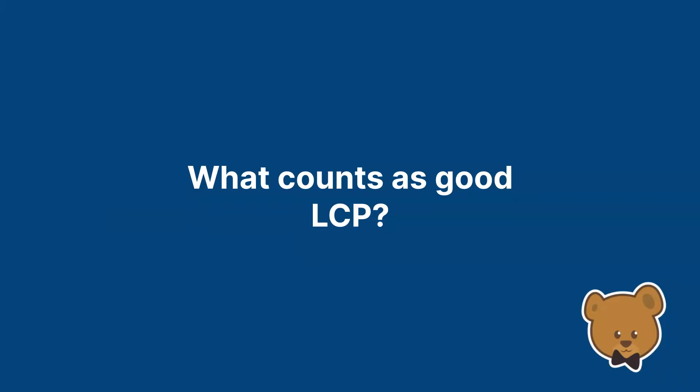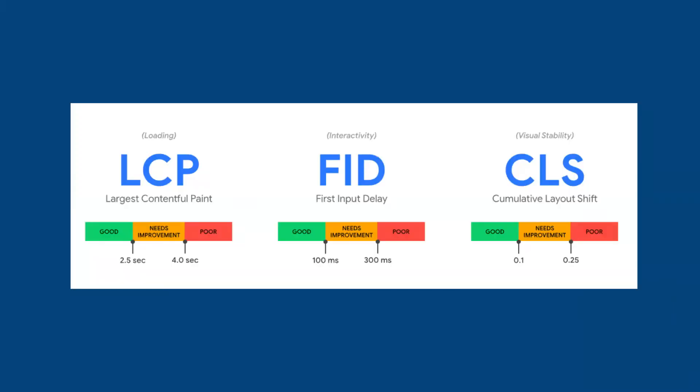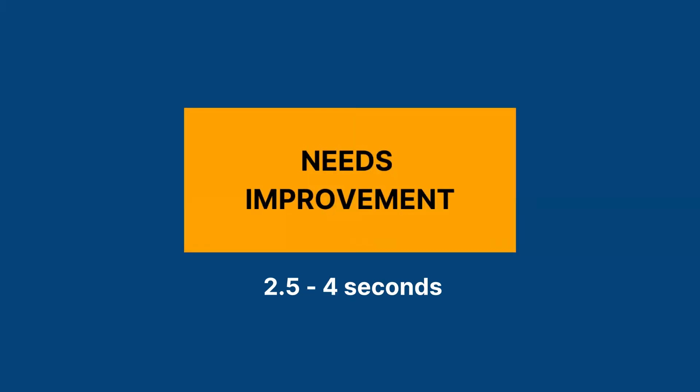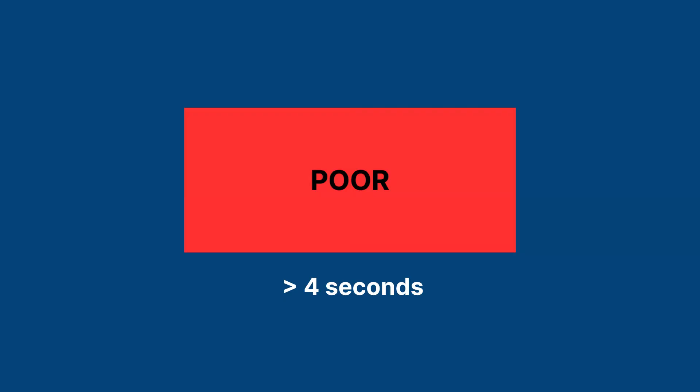What counts as good LCP? Google has different standards of measurement for each of its core web vitals. For LCP to be measured as good, the LCP element has to be loaded in under 2.5 seconds. 2.5 to 4 seconds is rated as needs improvement, and anything over 4 seconds is rated as poor.